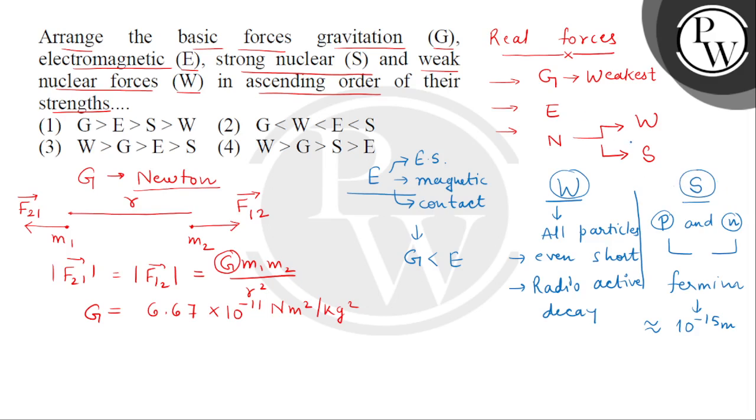Now if we look at the order of these four forces: weakest is gravitation, then stronger than that is weak nuclear, then more strong is electromagnetic, and the strongest forces are the strong nuclear forces. So when we check this order: G, W, E, S. We get the correct answer as option number 2. Thank you.